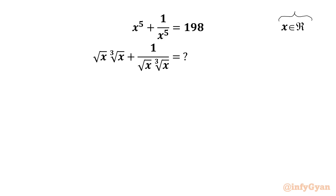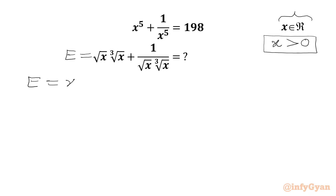Let's get started by writing the required expression equal to E first. We have square root x involved, and from the given equation we can also write that x must be positive. So E can be written as x^(1/2) · x^(1/3) + 1 over x^(1/2) · x^(1/3).